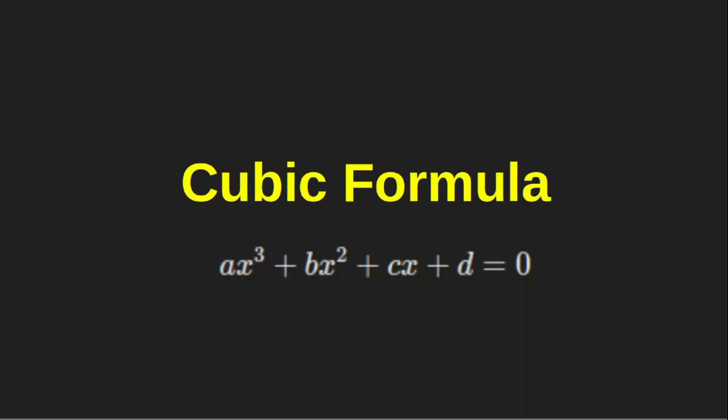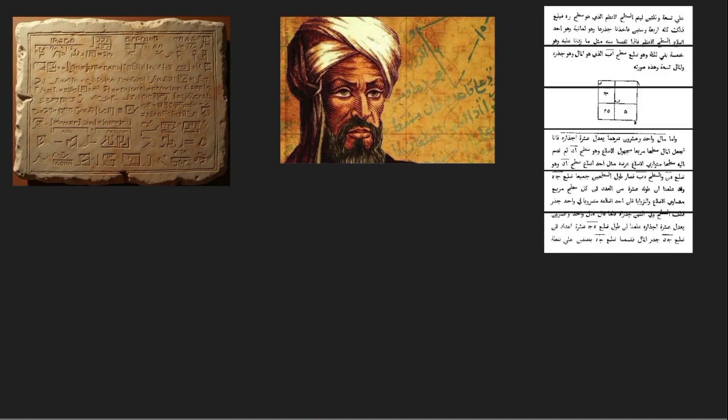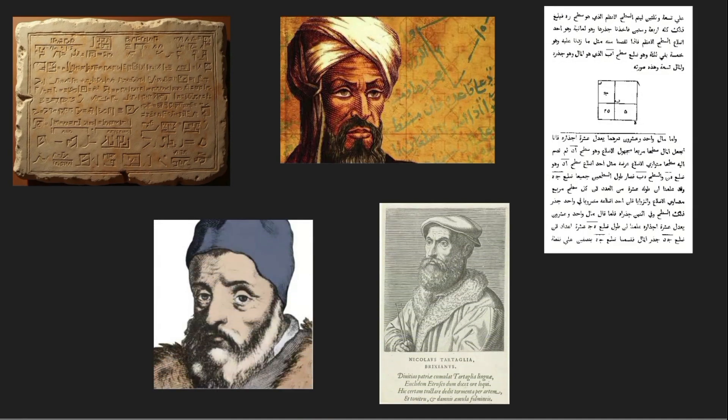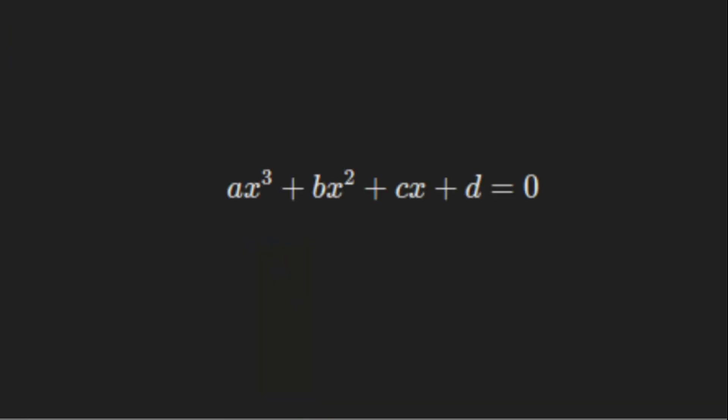Cubic equations date back to around 2000 BCE when the Babylonians solved specific cases geometrically. By the 9th century, Persian mathematicians like Al-Khwarizmi began exploring these equations. Then during the Renaissance, Italian mathematicians like Scipione del Ferro and Tartaglia cracked the general method for solving them. Their discoveries revolutionized algebra and laid the groundwork for what we know today. Let's explore how this historic breakthrough leads us to solving cubic equations in the modern era.